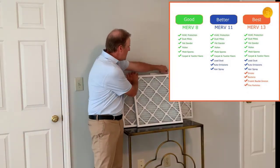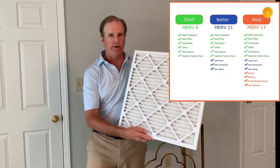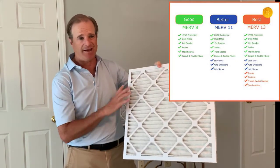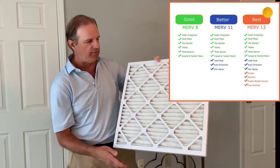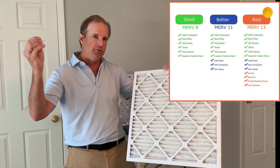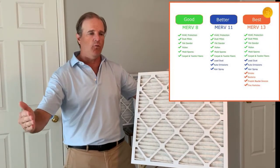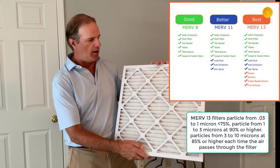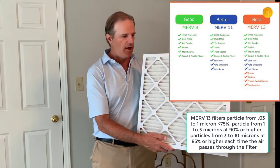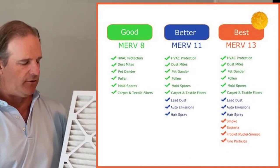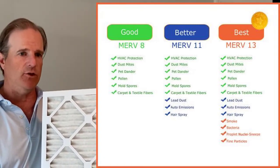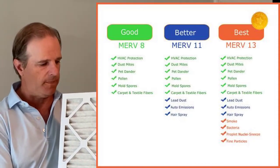The last filter is MERV 13, generally the highest level you'll find in a one-inch filter. It's used in high-end residential buildings and hospitals. MERV 13 filters down to the size of bacteria and viruses — down to 0.3 microns. From 0.3 to 1 micron, it filters out a large percent of particles every time air passes through. This is great for allergy sufferers and is generally the highest filtration level available for a one-inch filter in most residential buildings.